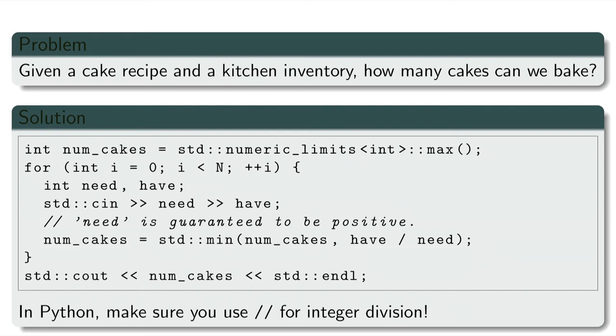Observe that we used integer division, and that it's guaranteed to be valid given that the amounts in the recipe are positive.